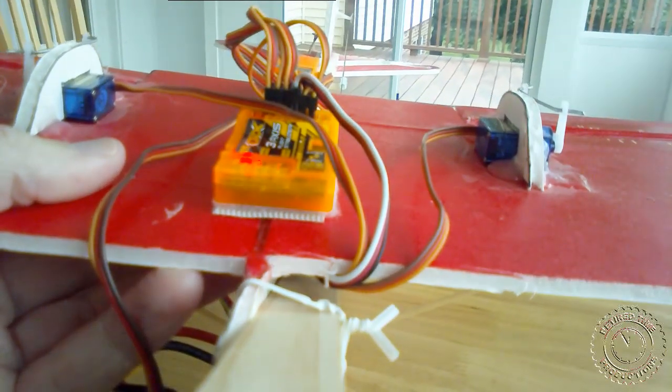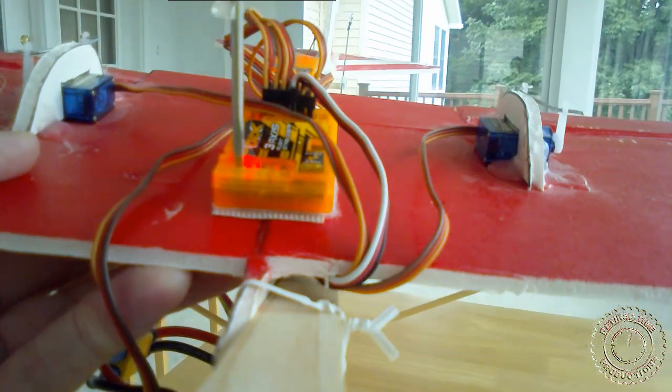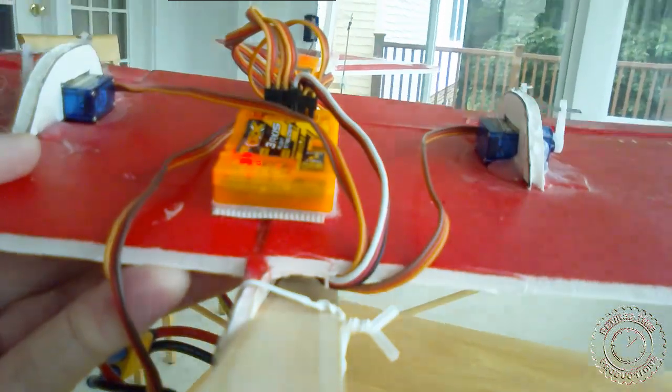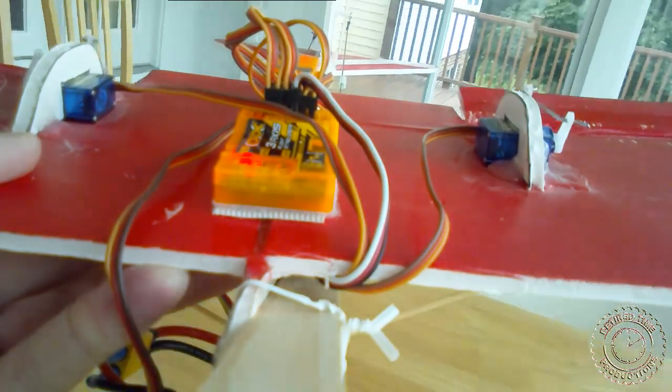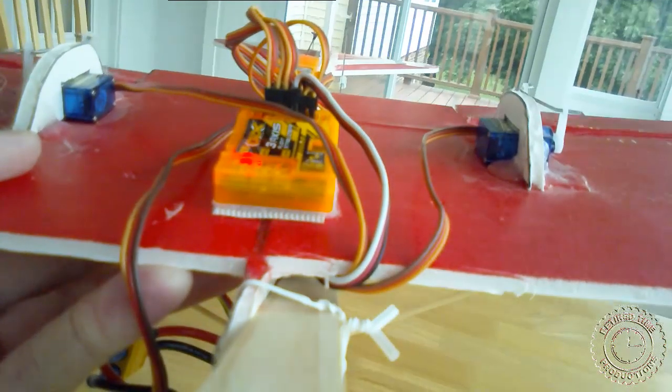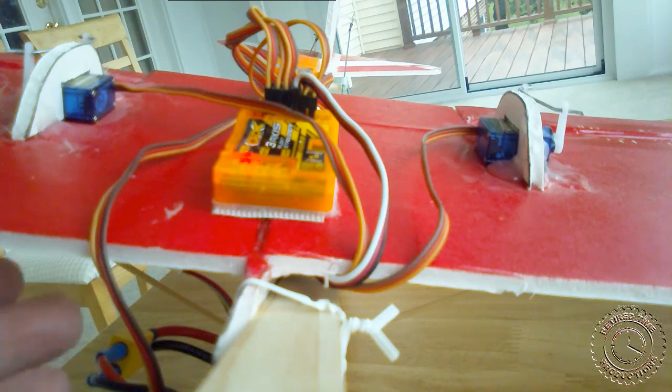Now let's start with the roll. If I turn the roll pot up all the way, you can start to see these feathers moving in response to me rolling the plane. But there's a lot of hunting going on. You can hear a little bit of hunting there.